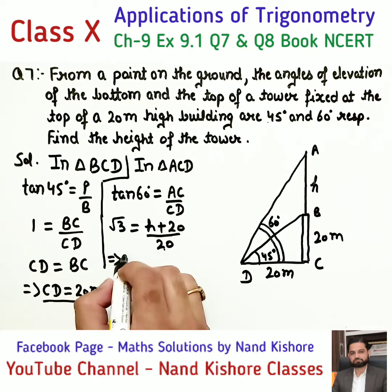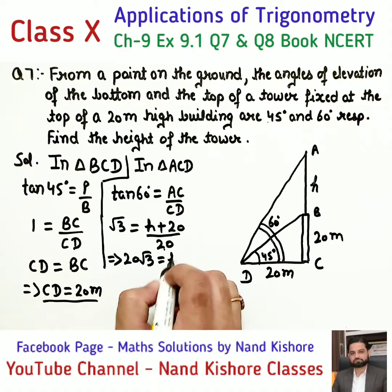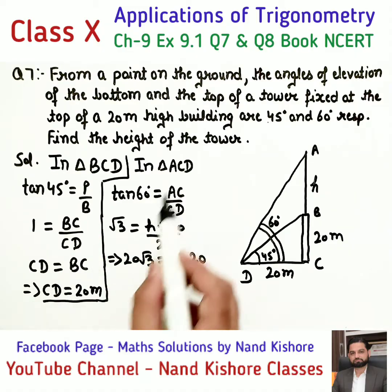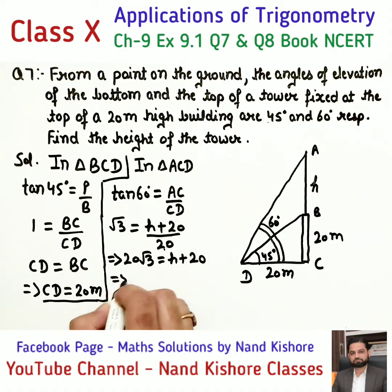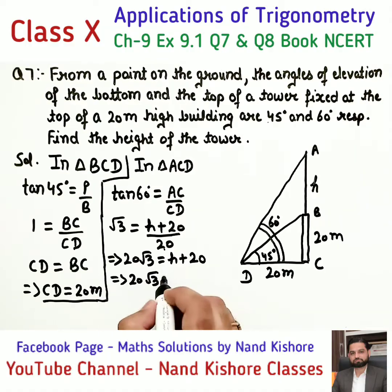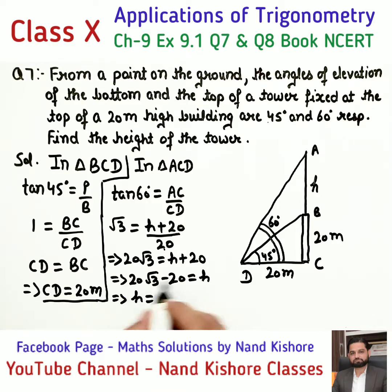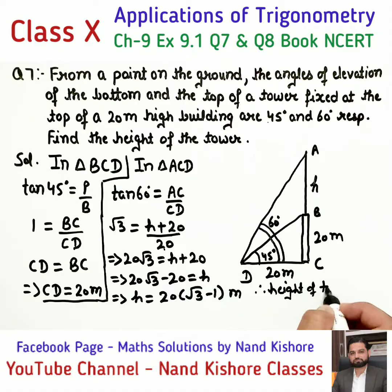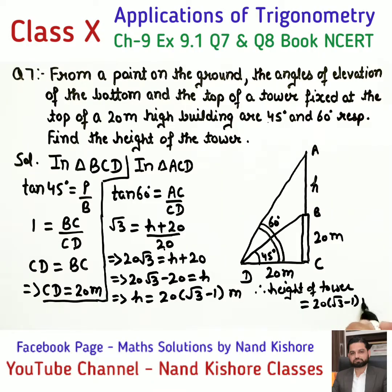Cross multiplying: 20 root 3 equals H plus 20. Bringing 20 to the left side, H equals 20 root 3 minus 20. Taking 20 as common, H equals 20(root 3 minus 1). Therefore, height of tower equals 20(√3 − 1) meters.